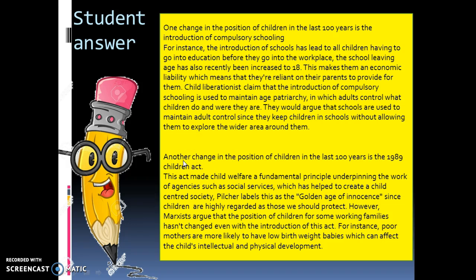As an examiner, that just makes it really easy to read. In the first example, the student has mentioned compulsory schooling, linking it into the introduction of education increasing to 18, and mentioned a little bit of theory, linking a concept in. There are a couple of concepts here: economic liability and maintained age patriarchy, and they're using a little bit of analysis about the problem of it.